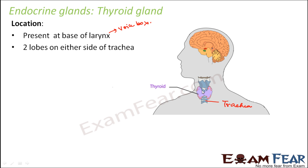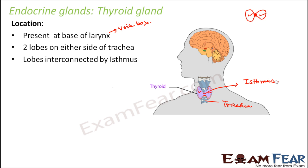There is one lobe on one side of the trachea and one lobe on the other side, giving a total of two lobes. These two lobes are connected by a bridge-like structure. This bridge is known as the isthmus, which is nothing but a piece of connective tissue connecting the two lobes of the thyroid gland.